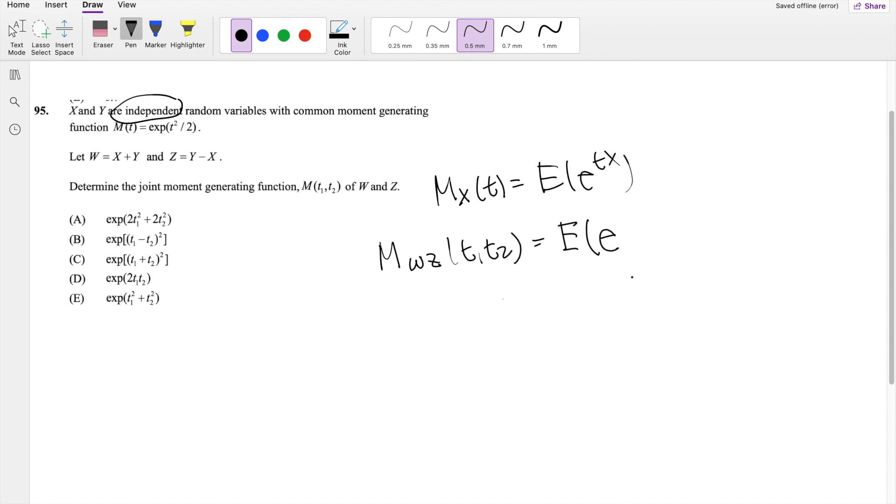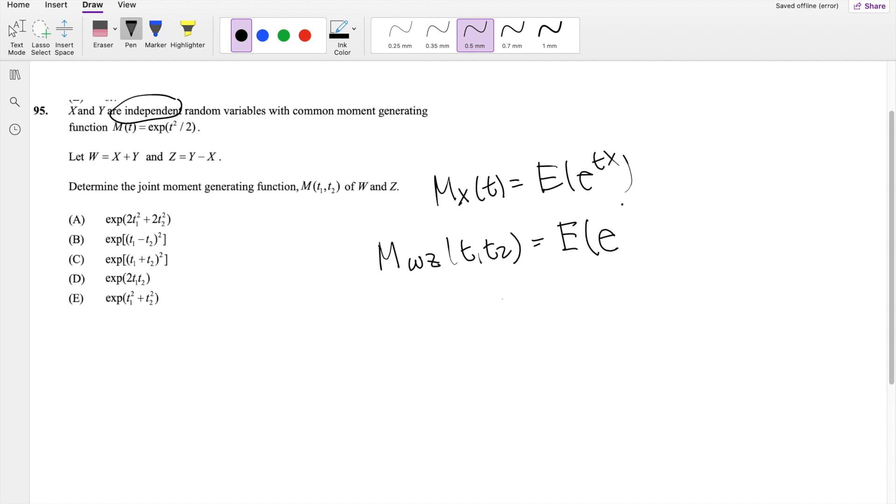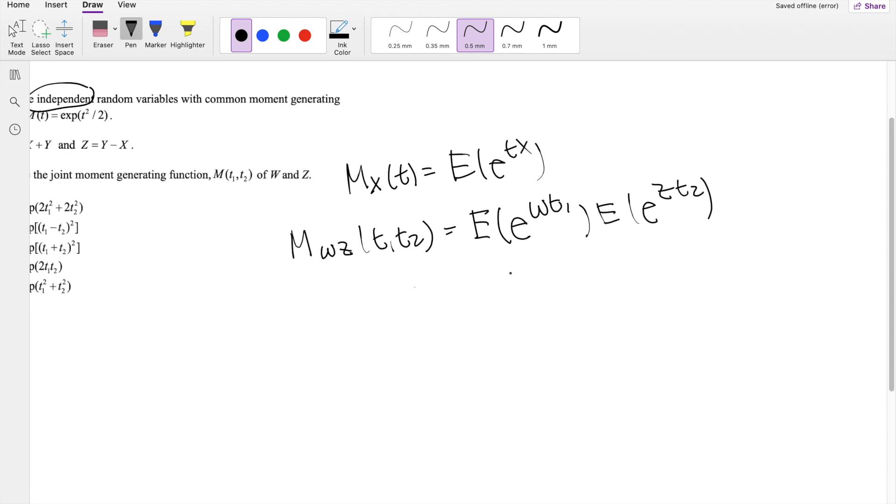So E to the value of T in our case, it would be T1 of W. X would be W, so that's going to be equal to WT1. And because we know these are independent, we can actually multiply these together. E to the value of ZT2. And we can actually put these together as well because of independency. So this is equal to the expected value of E to the WT1 plus ZT2.